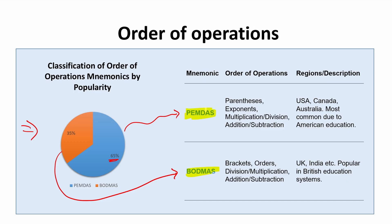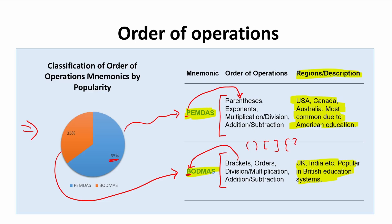The key point is: it doesn't matter which order of operations you choose — PEMDAS or BODMAS — it's absolutely the same thing; it just depends on what country you live in. For example, PEMDAS is used in some regions, while UK and India students use BODMAS. The first letters differ — P for parentheses vs. B for brackets — but the meaning is completely the same; we're talking about grouping symbols.